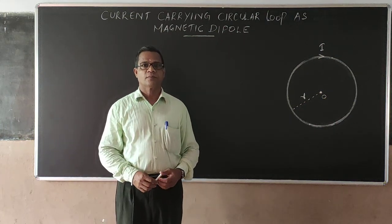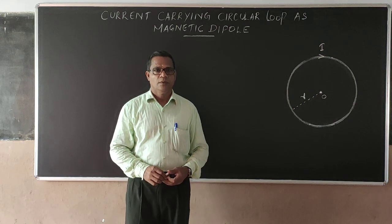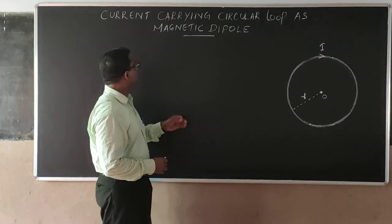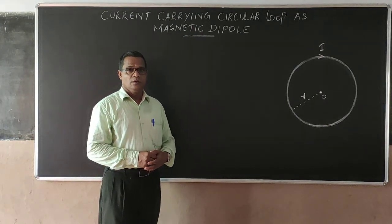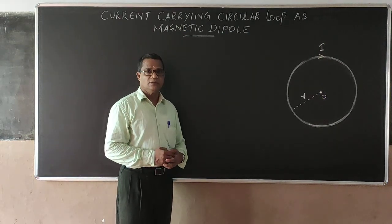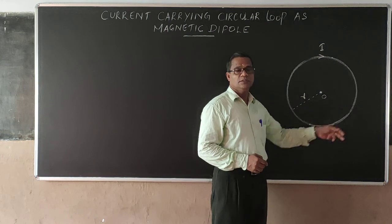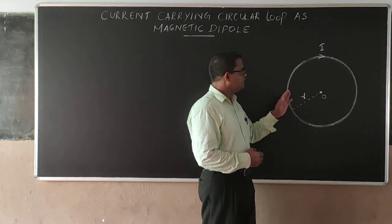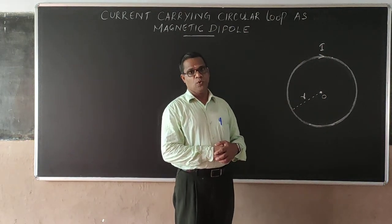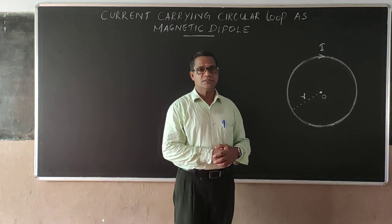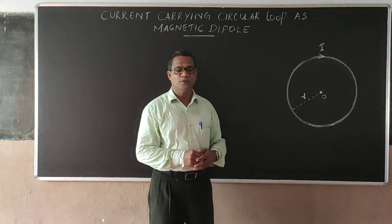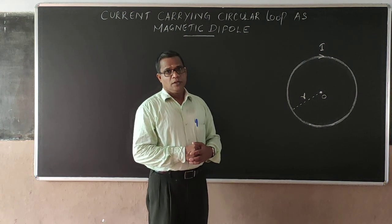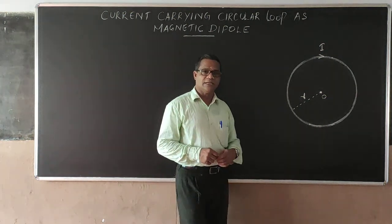In this video we discuss the current-carrying circular loop as a magnetic dipole. We already studied that a circular loop carrying current produces a magnetic field, and effectively this circular loop acts as a magnetic dipole — that means two equal and opposite magnetic poles separated by a small distance. Now let us see how this circular loop acts as a magnetic dipole.